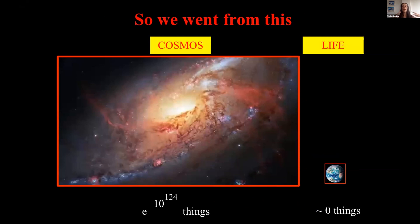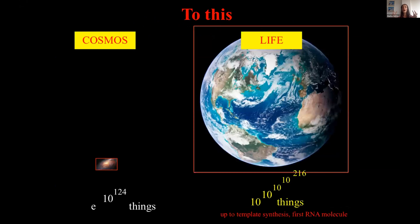So the cosmos has the biggest number of contribution to diversity and our planet has zero. And the number we came up with after using the complexity of life compared to the dark energy that dominates the universe is this one: 10 to the 10 to the 10 to the 216.